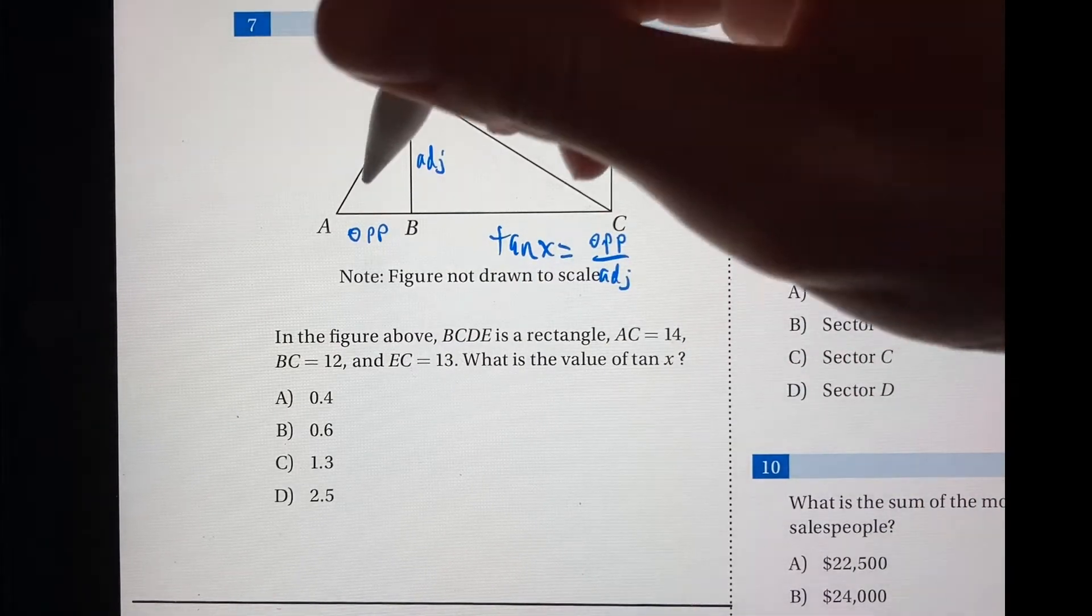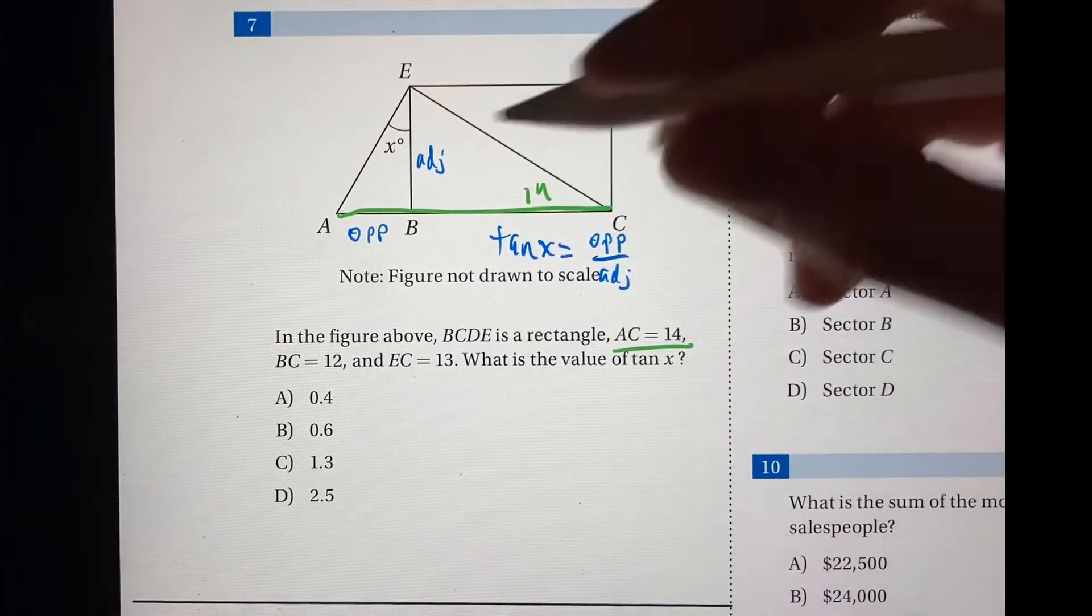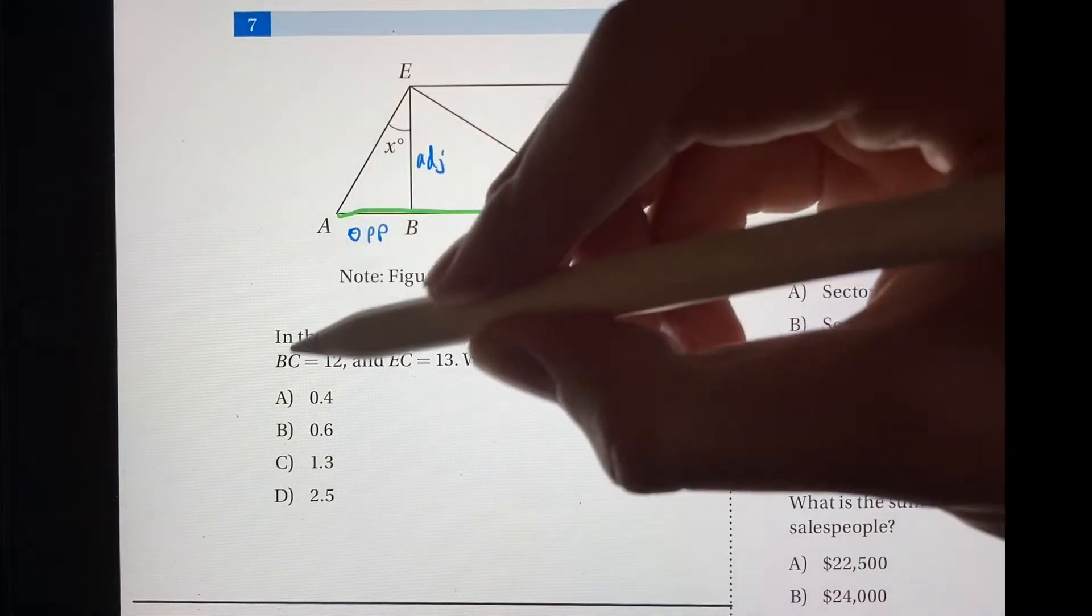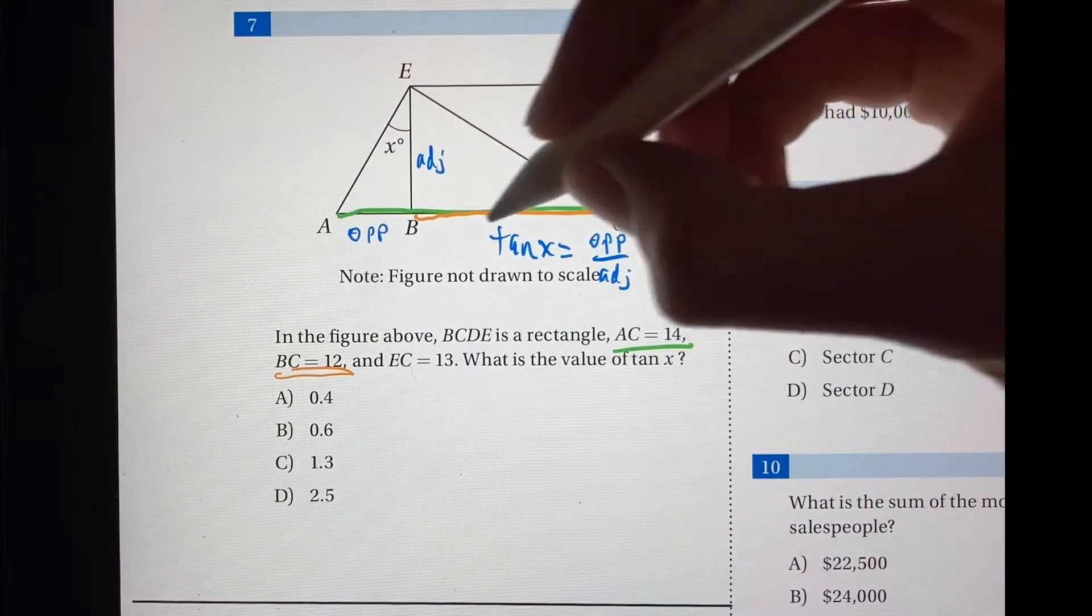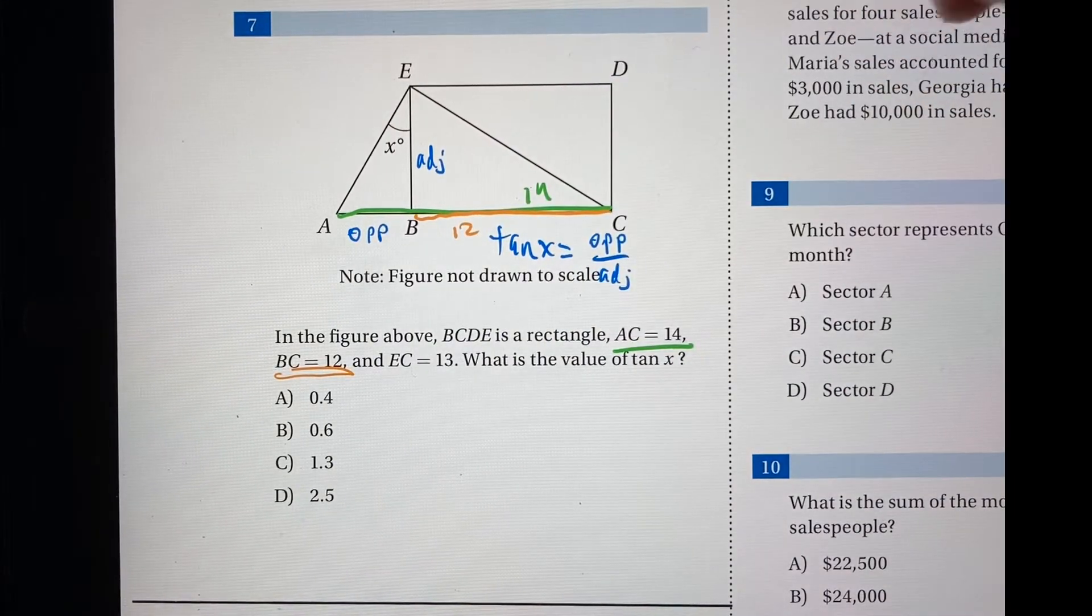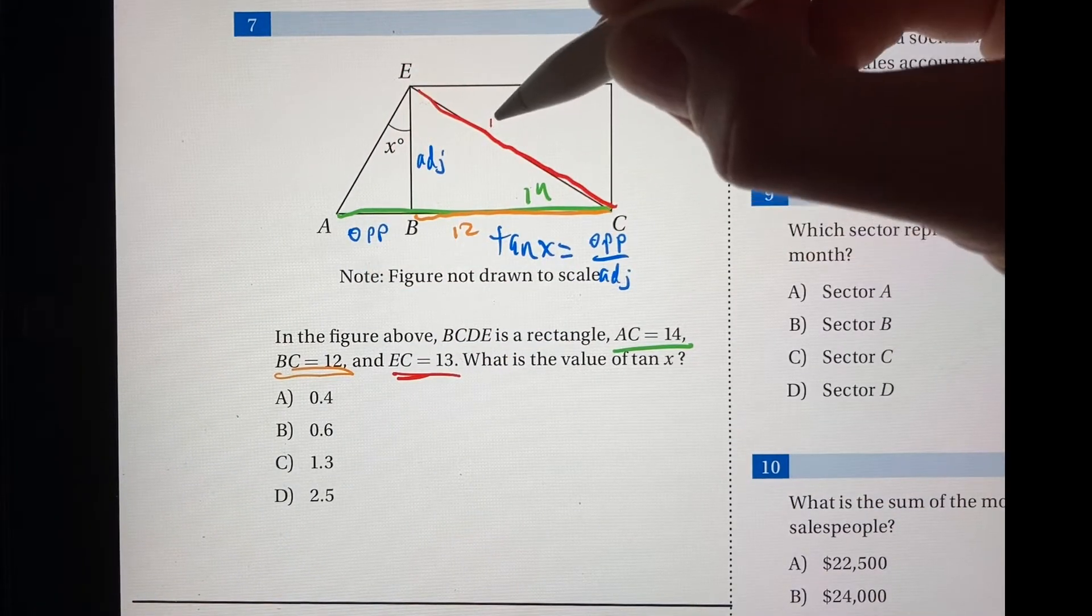So AC is equal to 14, so it gives us this side length right here. This is equal to 14. And BC is equal to 12. So BC is this line segment. This is 12. And it also gives us EC, which is 13. So EC is right here. So this is 13.